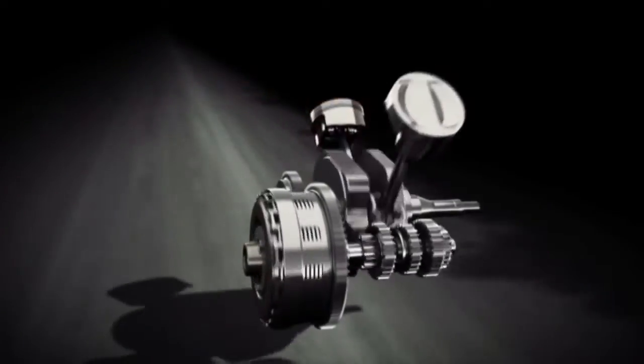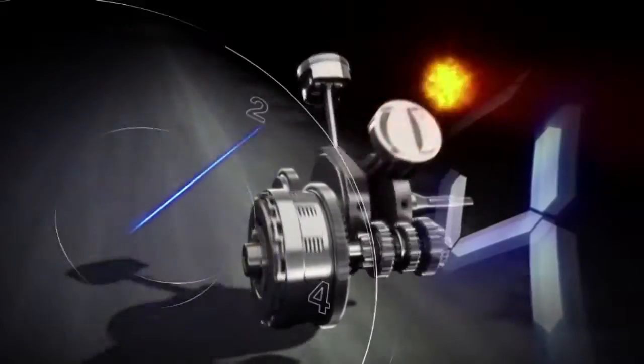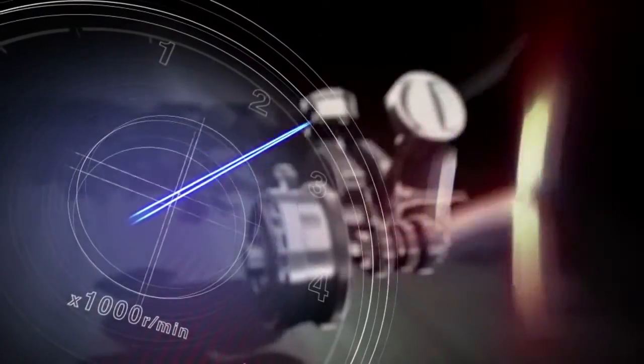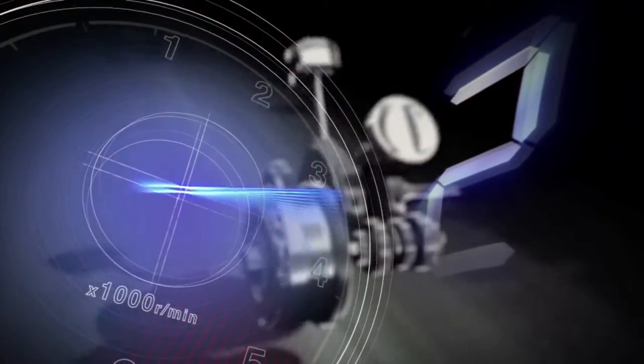But that's not all. These ramps also perform a slipper function. Slipper type back torque limiting clutches have been used for years on racing motorcycles and sport bikes to greatly facilitate braking and downshifting from high speed. Now cruiser riders can enjoy the same experience.